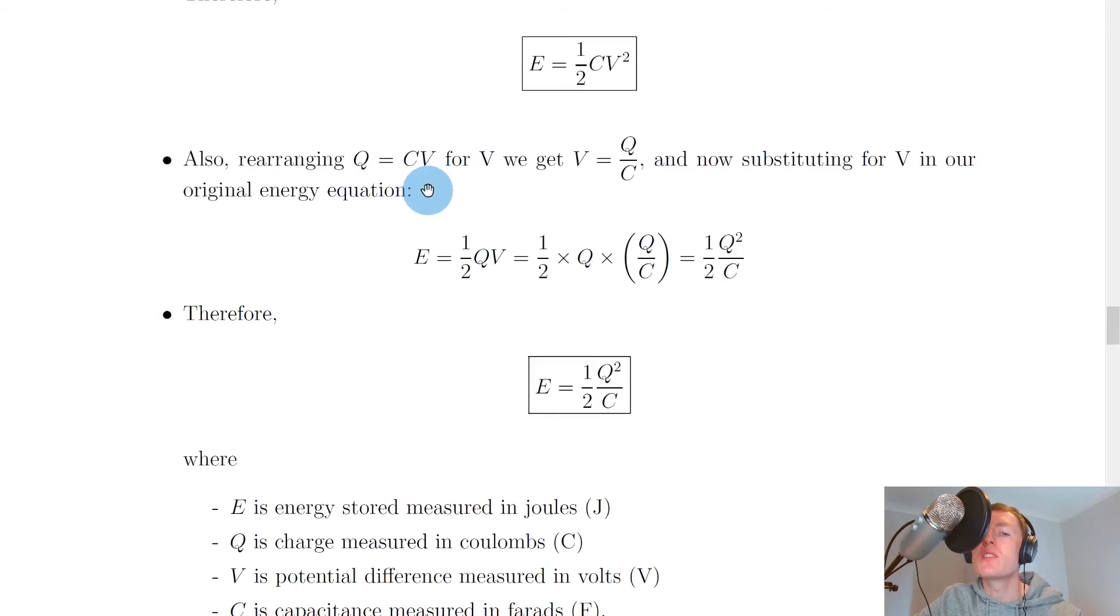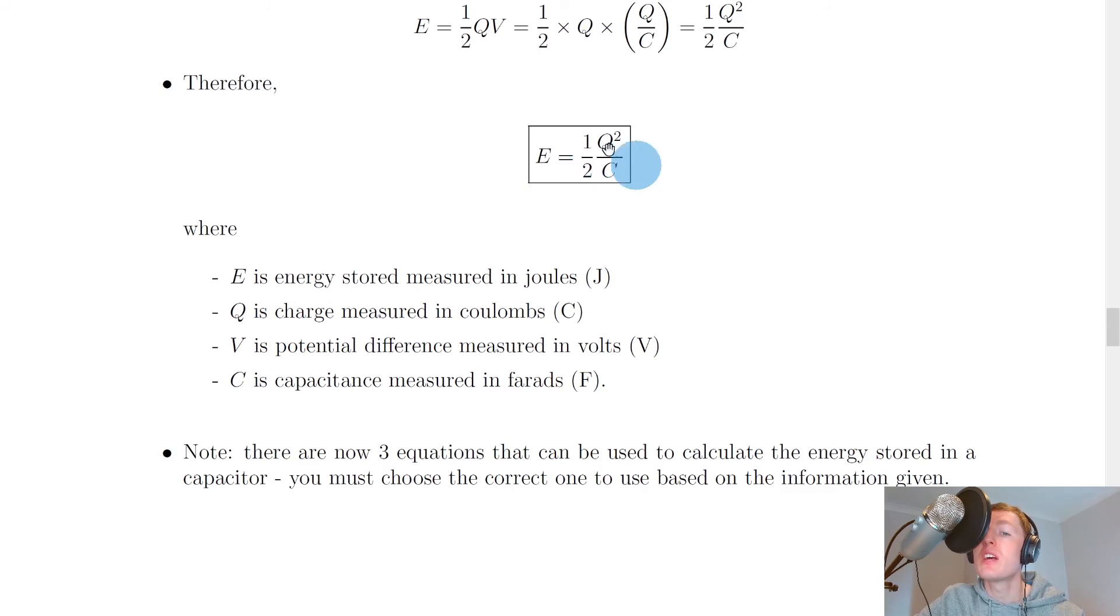Also rearranging q equals cv for v this time, we can get v equals q over c. Now substituting for v in our original energy equation, e equals a half qv, we get a half times q times q over c, just subbing in for that v there. And because of the q times q here, we get a half q squared over c. So this time in the box, we have e equals a half q squared over c.